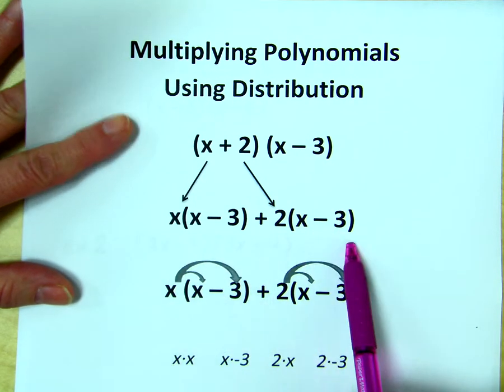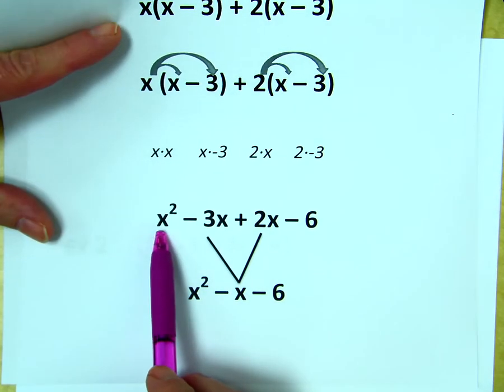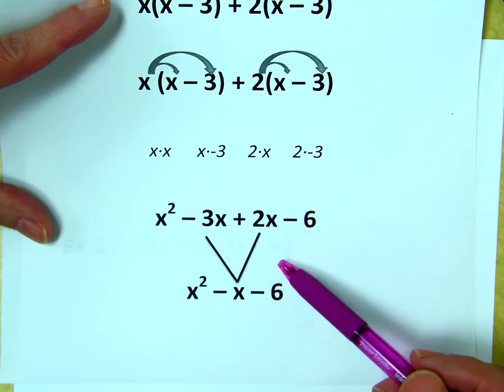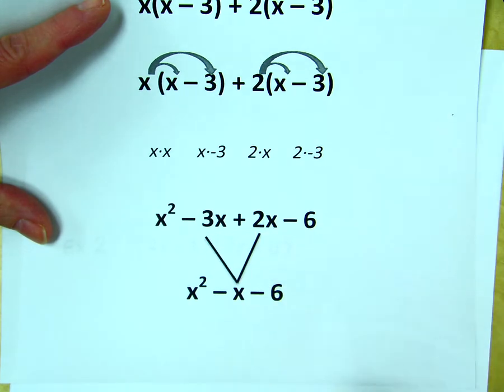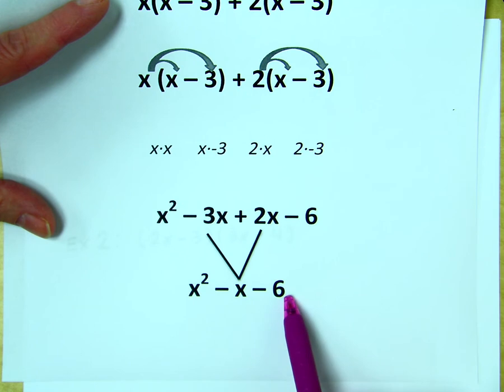At this point, we simply use distribution to end up with x squared minus 3x plus 2x minus 6, and then simplify this by combining like terms, and we end up with an answer of x squared minus x minus 6.